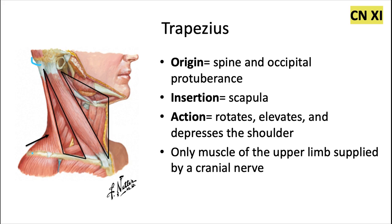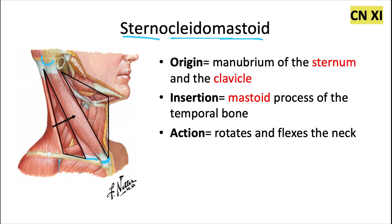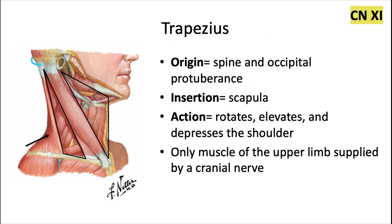It's the only muscle of the upper limb that's supplied by a cranial nerve, which is interesting. The sternocleidomastoid, as well as the trapezius, are the two big muscles to remember that are innervated by cranial nerve 11, which is the spinal accessory nerve.